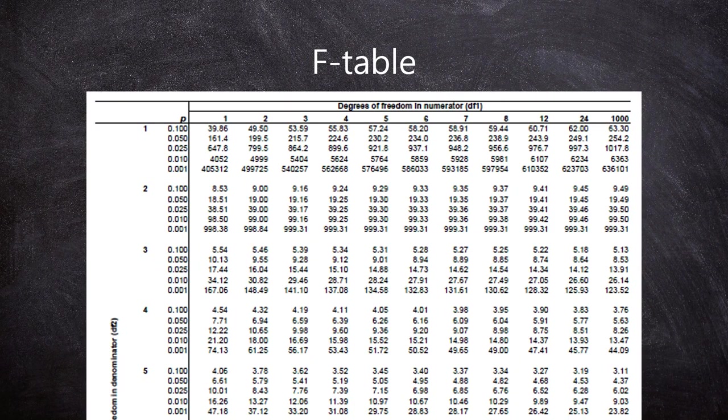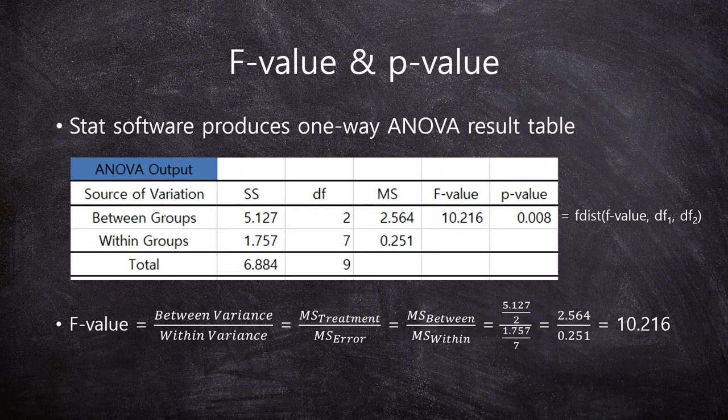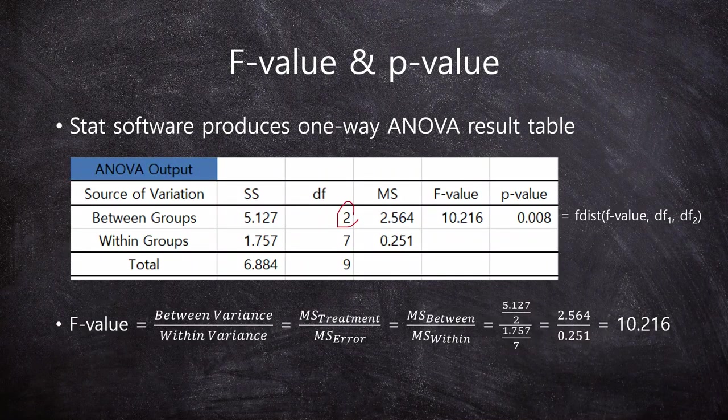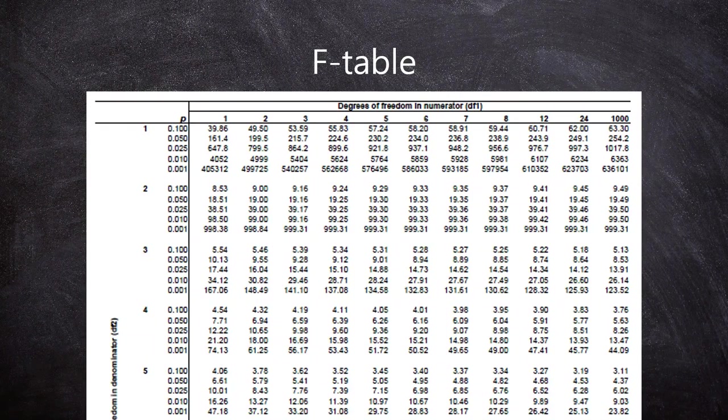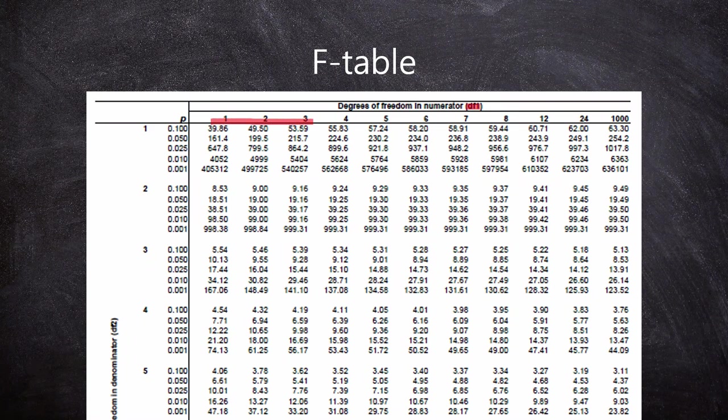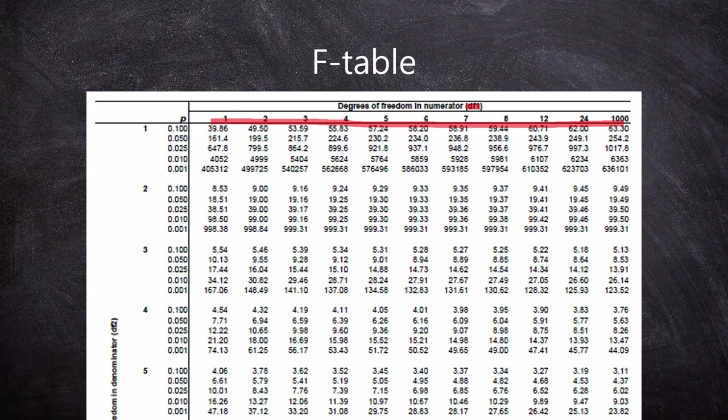But as I said, in Z-test there is a Z-table, in T-test there is a T-table. Likewise, in F-test, which is ANOVA, there is an F-table. In F-test, we have two degrees of freedom. So these numbers are DF-1 and these numbers are DF-2.